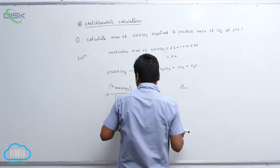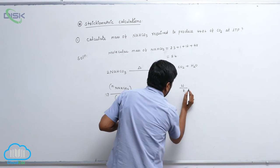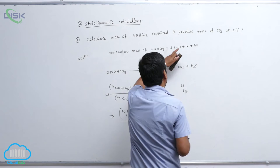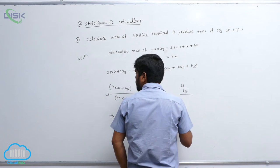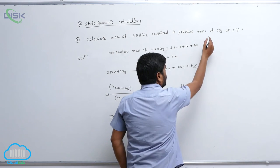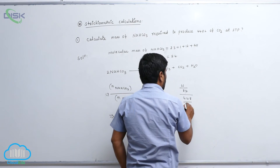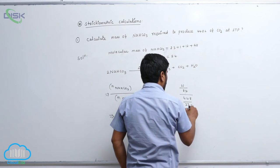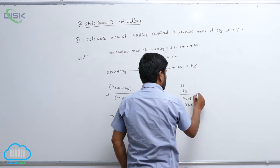So therefore weight we can find out w, we don't know, molecular weight of this one is 84. Earlier we calculated, so therefore volume here is 44.8 by 22.4.